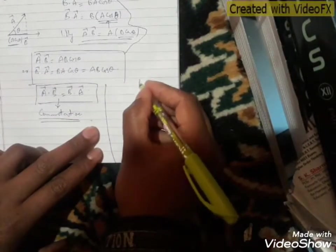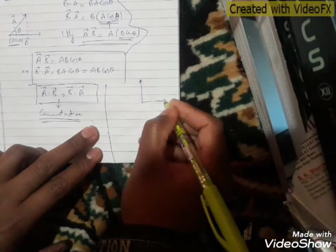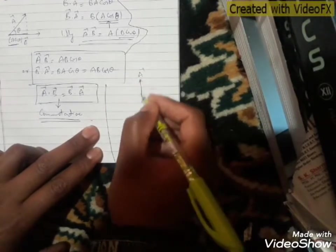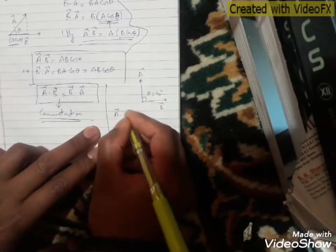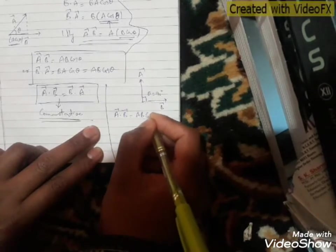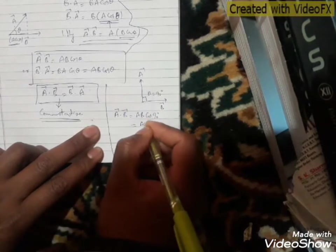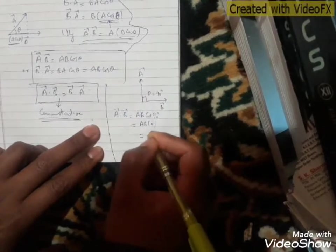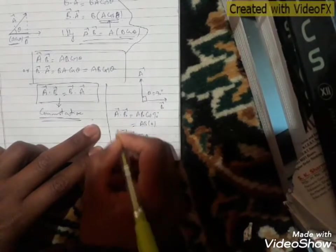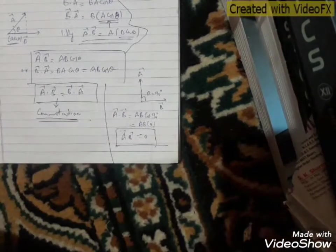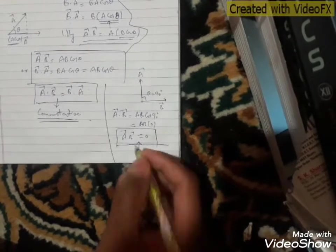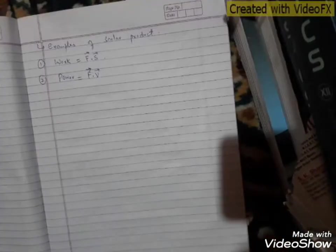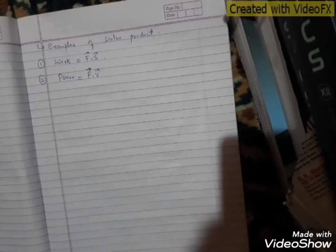If we have two vectors — vector A and vector B — with angle theta equal to 90°, then A dot B equals AB cos 90°. Since cos 90° = 0, the result is zero. This is a very important point: if two vectors have an angle of 90° between them, their dot product or scalar product is always zero.